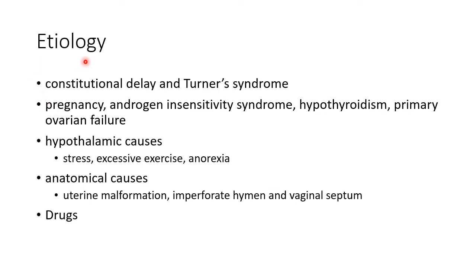Now let us see about the etiology of primary amenorrhea. Constitutional delay is the commonest cause. Turner syndrome is another common cause. Other causes include pregnancy, androgen insensitivity syndrome, hypothyroidism, and primary ovarian failure. Hypothalamic causes include stress, excessive exercise, and anorexia. Anatomical causes include uterine malformation, imperforate hymen, and vaginal septum. Drugs like chemotherapeutic agents can also lead to primary amenorrhea.